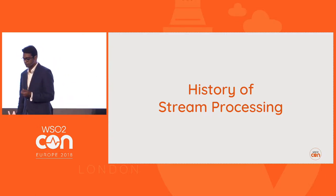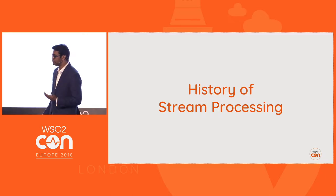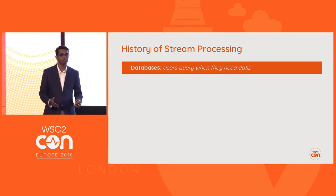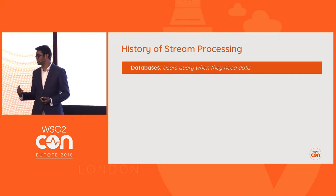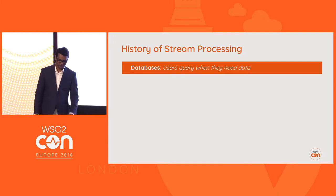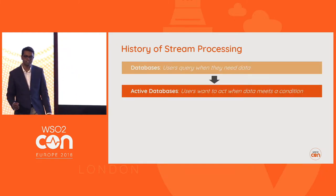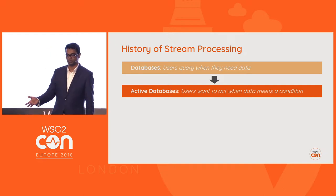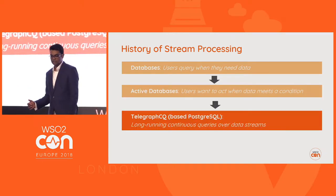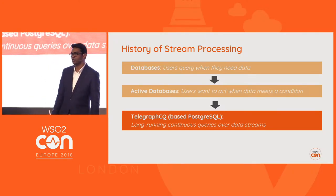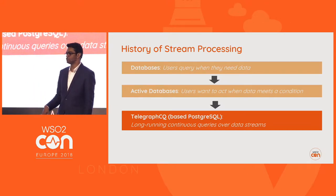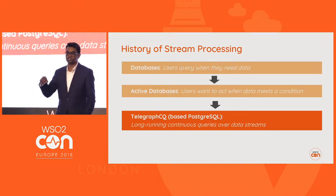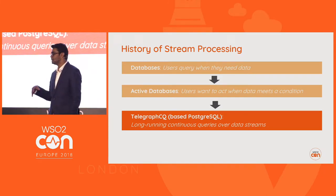Before going further, let's look at the history of stream processing. With traditional databases, you query once in a while to check for changes. Then people moved to active databases with triggers — the database triggers automatically when there's an input. The first real implementation was TelegraphCQ, which deployed long-running queries on top of a database: when the database is invoked, the query informs you of whatever matches.